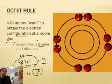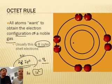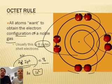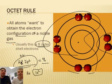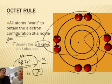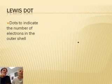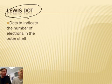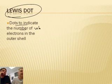Sometimes they call this the octet slash duet rule — two people, for two. Atoms want to have the same electron configuration as a noble gas, which has eight valence electrons — it's the most stable configuration, so that's why they want it. Everybody wants eight. That leads us to a way that we symbolize things called Lewis dot structures. The dots indicate the number of valence electrons — the outer shell electrons.